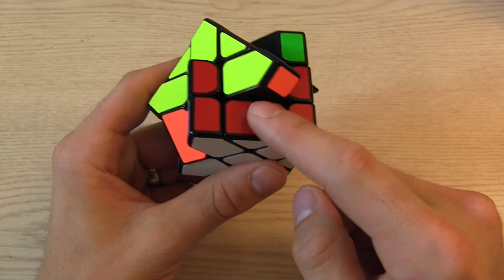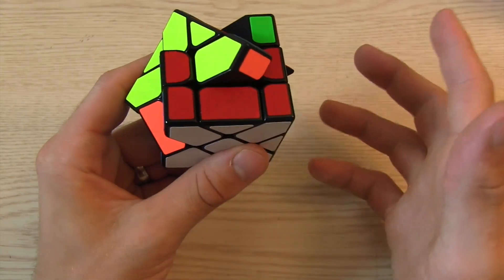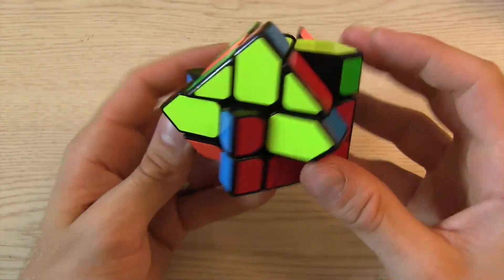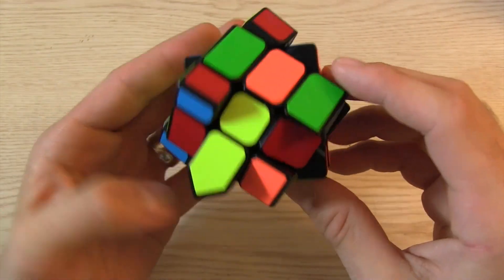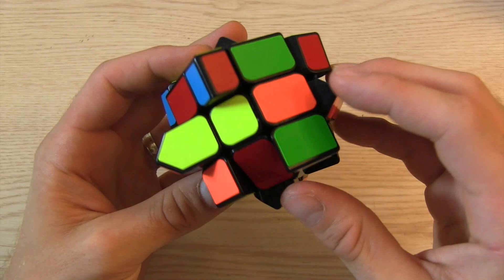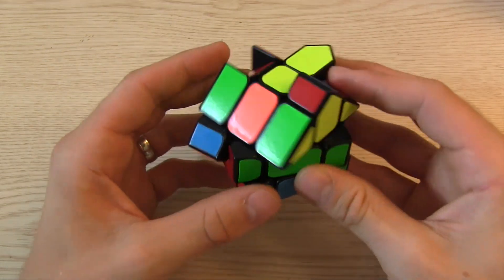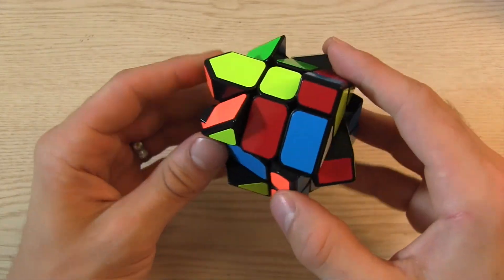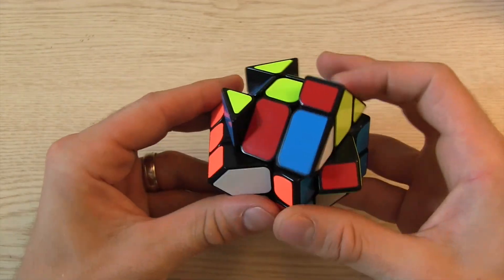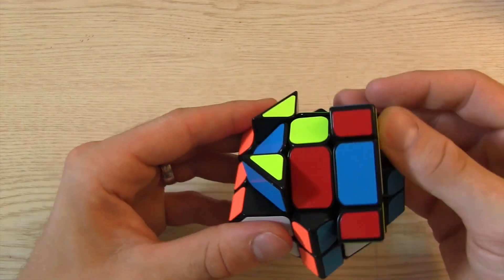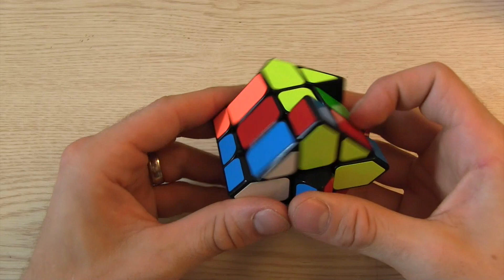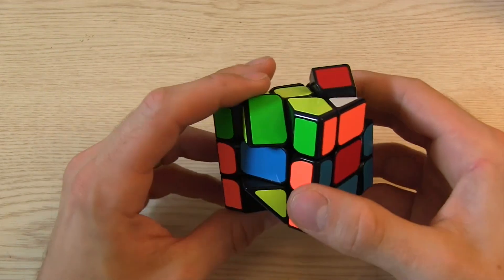Then I'll put in the corners, which on a Fischer cube looks like an edge. So there's red, I need another red one I think, nope, I need green. And then blue. Nope, what am I doing? Blue goes here. And then orange.